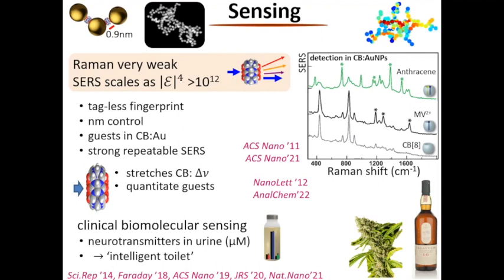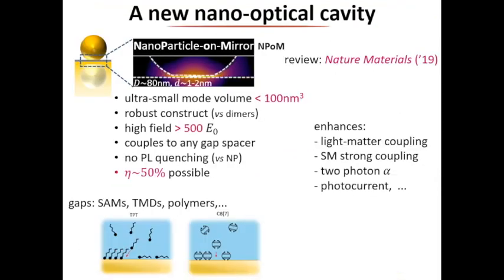We're getting to the stage of actually trying to build something low-cost enough to go into a toilet and screen urine. We can look at neurotransmitters and hormones, which allows you to track small biomolecules in the body over long periods of time - something you can't do with traditional methods like mass spec. For optics, I think this is going to be really crucial. My group prefers to work on cannabis and whiskey, I'm sorry to say.